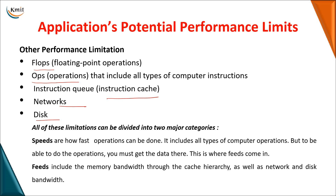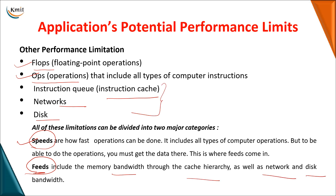When you have seen all these factors, these limitations can be grouped under two categories. One is speed — at what rate you are able to execute your operations such as FLOPs and OPS. But to perform these operations, you need data. That data comes under feeds — how you get data from memory bandwidth, the cache hierarchy, network, and disk. Depending on the operation, memory bandwidth and arithmetic intensity can be grouped into either the speed category or the feeds category.